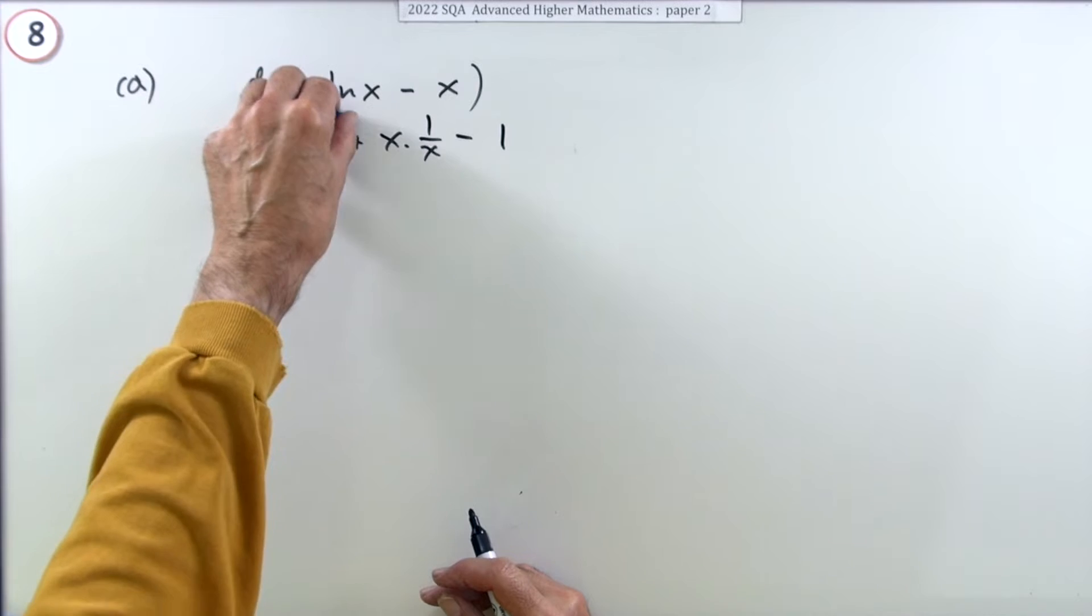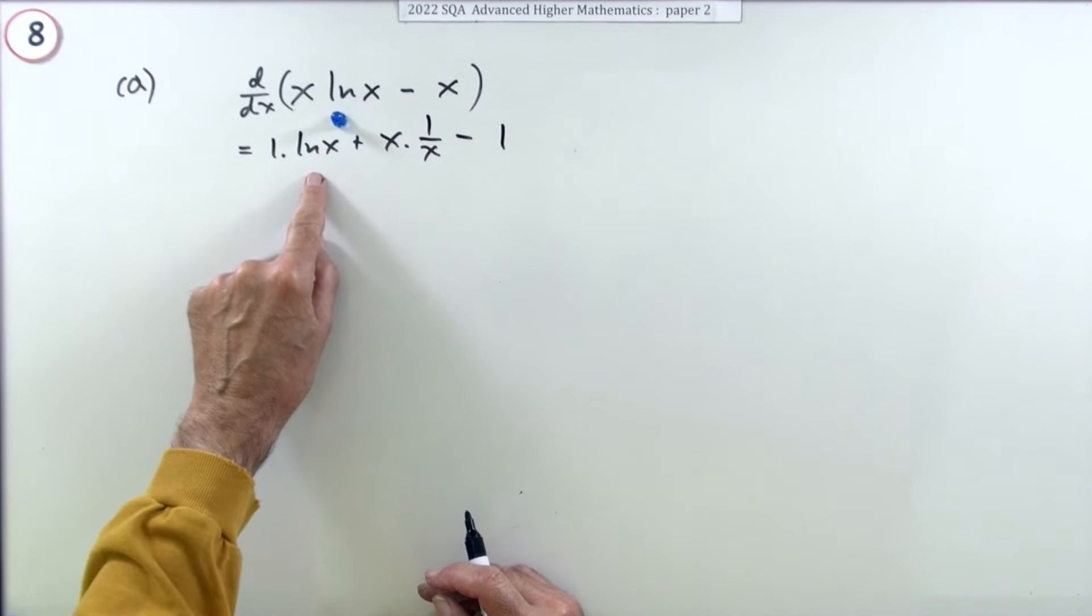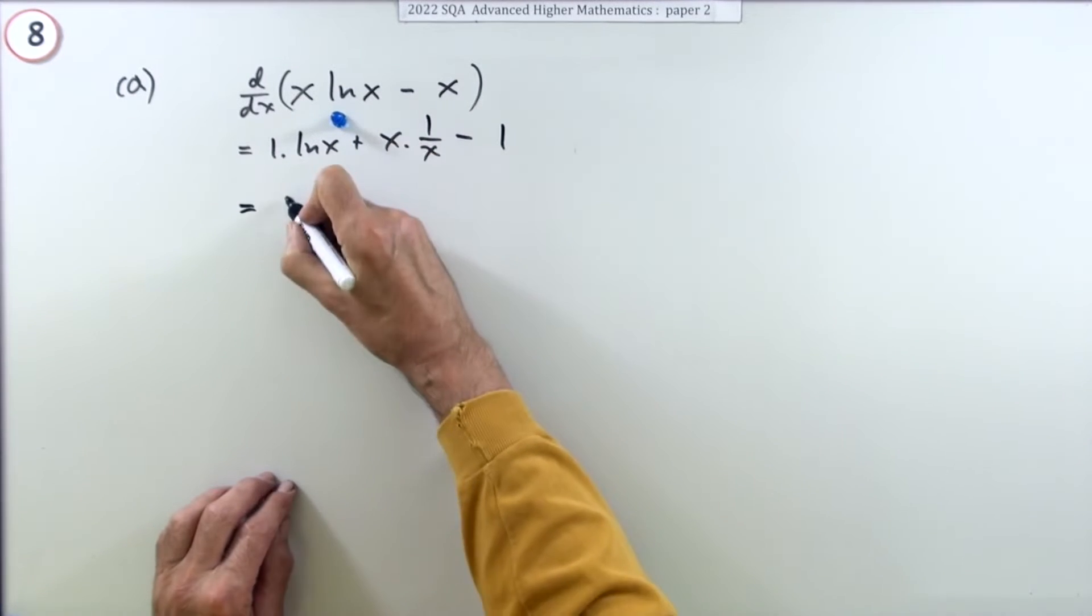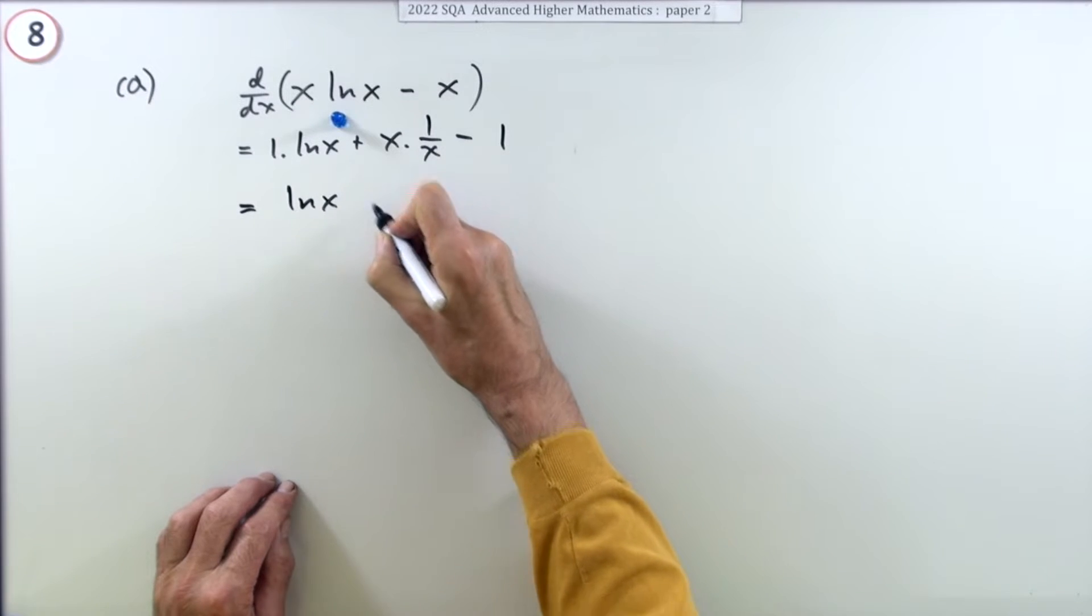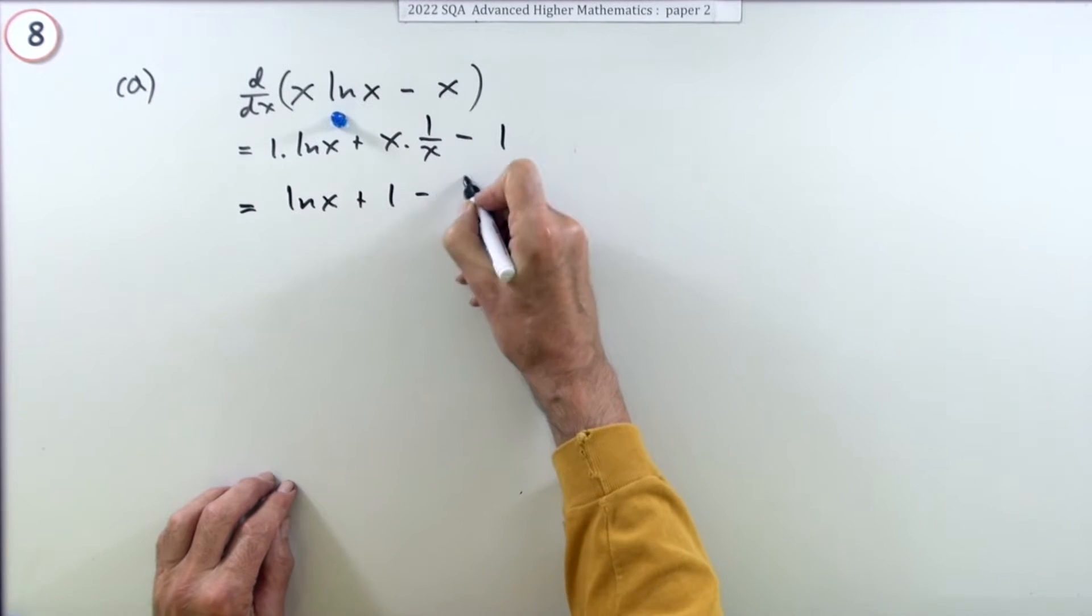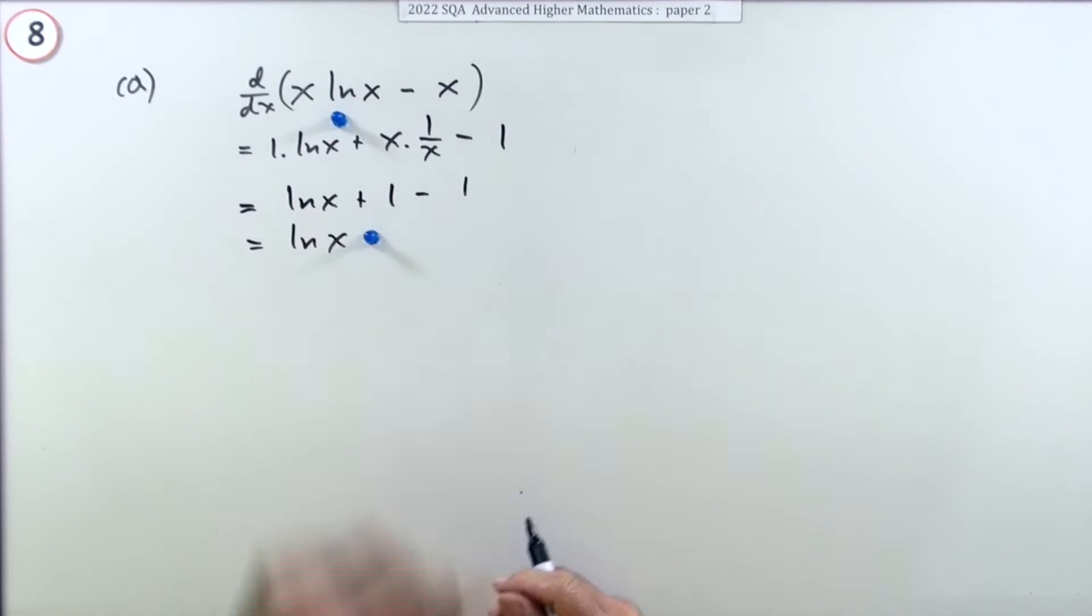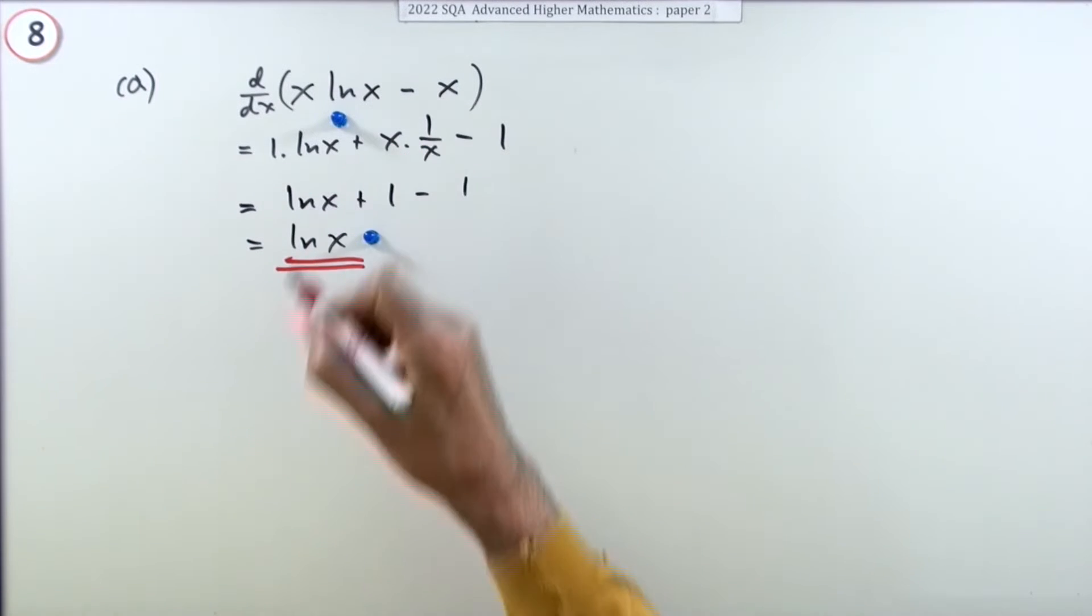Now straight away that's done, there's two marks. You've got one mark for using the product rule and getting one of the derivatives. You get the other mark when you finish it off. So tidying it up, that's ln(x) plus one minus one, so it's ln(x). Two marks. Well that part was straightforward.